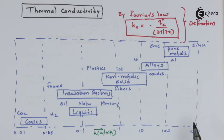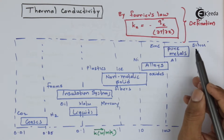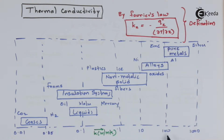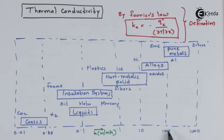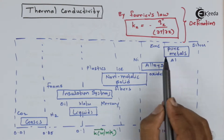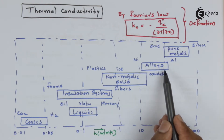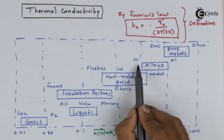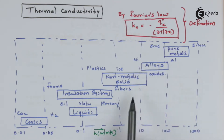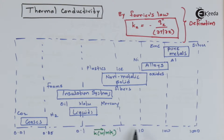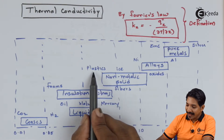In this chart, the value of thermal conductivity is listed varying from solids to fluids, in units of Watt per meter Kelvin. For pure metals such as zinc and silver, it ranges from 100 to 1000. For alloys like nickel and aluminum, it varies from 10 to 100. For non-metallic solids such as plastic, ice, and oxides, it ranges from 1 to 10.